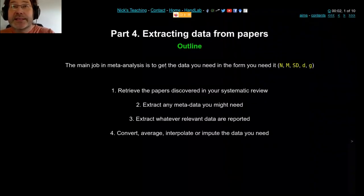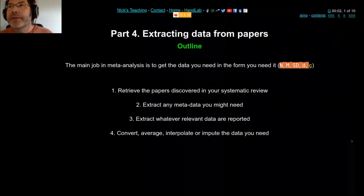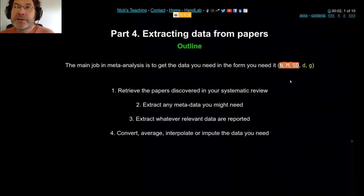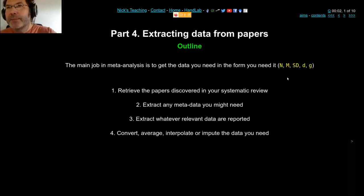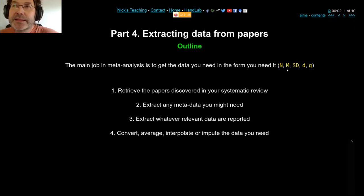The whole point of your meta-analysis is to take a load of different papers and get the same numbers from those papers for your thing — whatever it is, the intervention you're studying. The three critical ones, which you can't do anything without, are the number of subjects, the mean, and the standard deviation. If there's no evidence in the paper that those things exist, you can stop there, but you can recreate them from lots of other things.